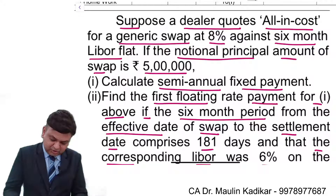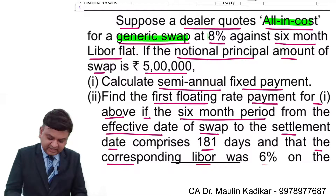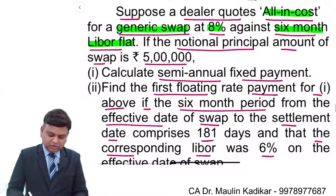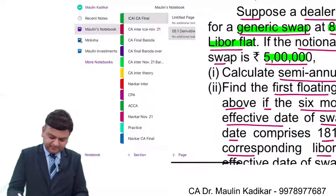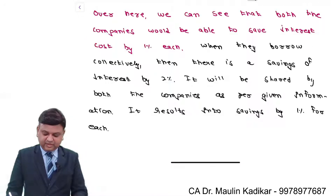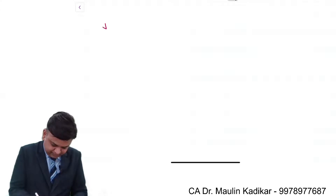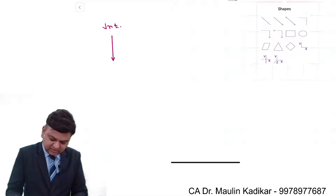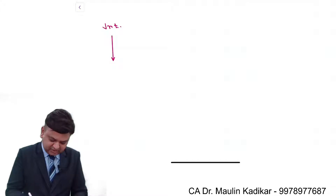A dealer quotes all-in cost for a generic swap at the rate of 8% against 6 months LIBOR flat, and the notional principal is 5 lakhs. We are required to compute interest at both the floating rate and the fixed rate.